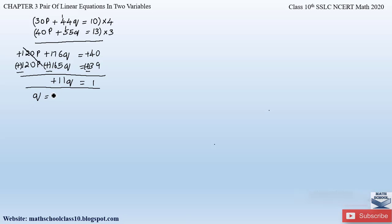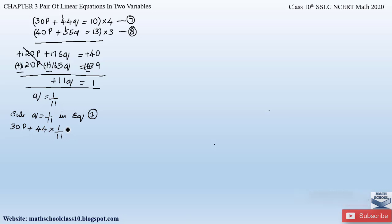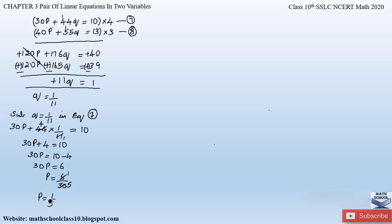Therefore q equals 1 by 11. Substituting q equals 1 by 11 into equation 7 (30p plus 44q equals 10): 30p plus 44 times 1 by 11 equals 10. Canceling, 44 divided by 11 equals 4, so 30p plus 4 equals 10, giving 30p equals 6, therefore p equals 6 by 30, which simplifies to 1 by 5.